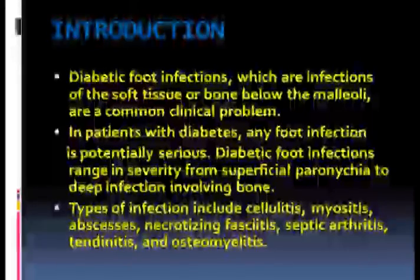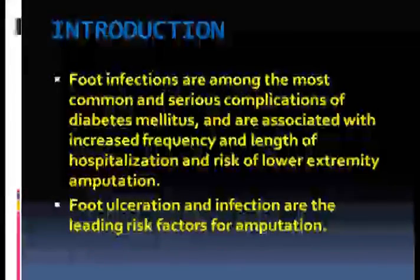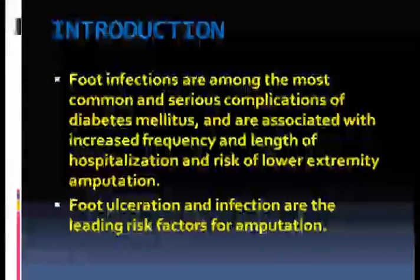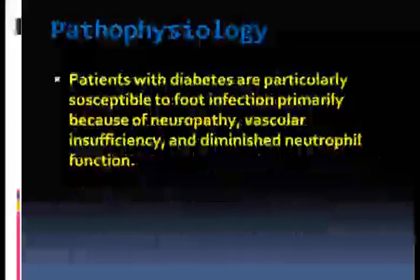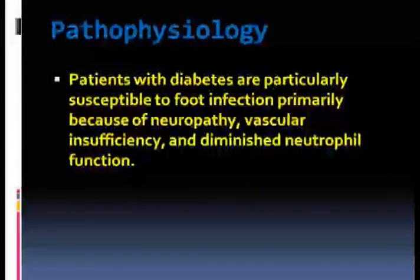Types of infection include cellulitis, myositis, abscesses, necrotizing fasciitis, septic arthritis, tendinitis, and osteomyelitis. Foot infections are among the most common and serious complications of diabetes mellitus and are associated with increased frequency and length of hospitalization and risk of lower extremity amputation. Foot ulceration and infection are the leading risk factors for amputation. Patients with diabetes are particularly susceptible to foot infection, primarily because of neuropathy, vascular insufficiency, and diminished neutrophil function.